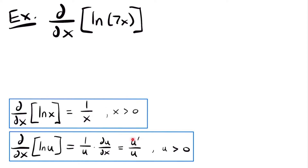The simpler form of the derivative rule is for ln(x), but we also have the more complete form: if you have the natural log of u, where u is a differentiable function of x, then this is equal to 1 divided by u times the derivative of u with respect to x. Another way of writing that is u prime divided by u, provided that u is greater than zero.